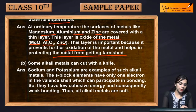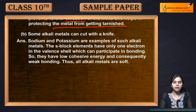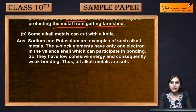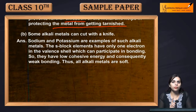Some alkali metals can be cut with a knife. We have seen that some metals are very soft and can be cut with a knife very easily. These soft metals are called alkali metals, which belong to Group 1 metals.